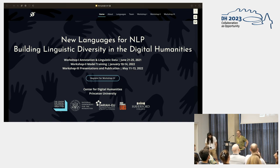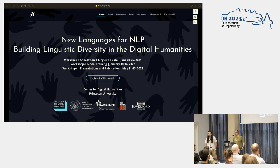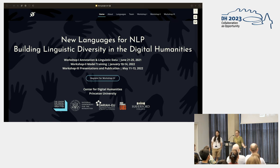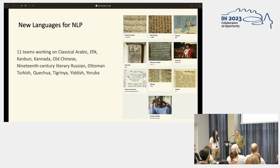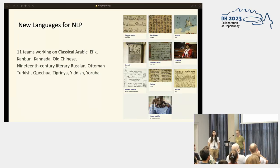We address these two questions through the pedagogical design of a series of workshops under the banner of the NEH Institute for Advanced Topics in DH, which we called 'New Languages for NLP: Building Linguistic Diversity in Digital Humanities.' When we put our call for proposals in January 2021, we were overwhelmed by the response — some 90 applications from scholars all over the world. Ultimately we selected 11 teams working on languages as different as Classical Arabic, Afik, Kanbun, Cantonese Chinese, 19th-century literary Russian, Ottoman Turkish, Kechua, Tigrinya, Yiddish, and Yoruba.